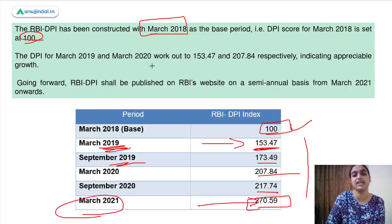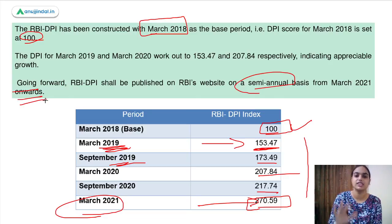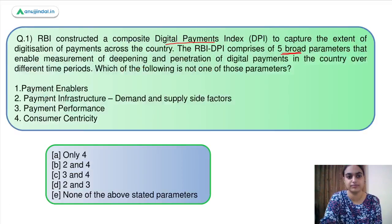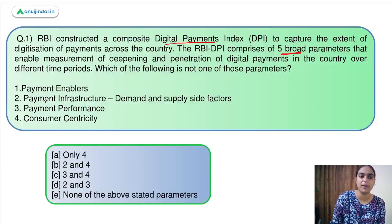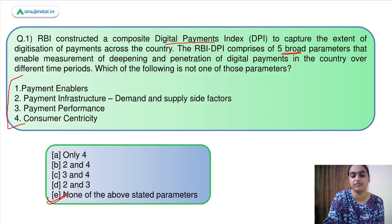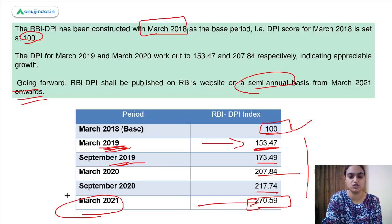This index is published semi-annually from March 2021 onwards. Moving back to the question: since all four listed options are parameters of the index, the answer is option E — none of the above.